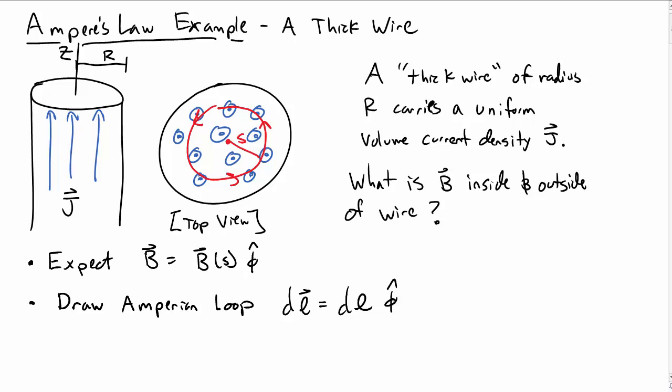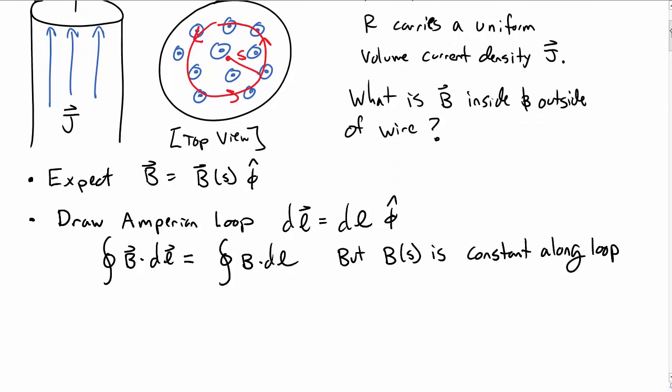We choose this because it makes our closed loop integral very nice. We're taking integral of b dot dl, which is just b times dl since they're pointing in the same direction. This is even easier because b is constant along the loop, which is constant along s.